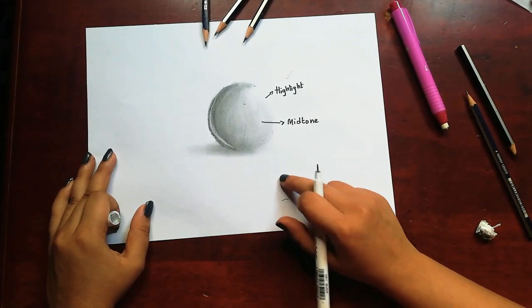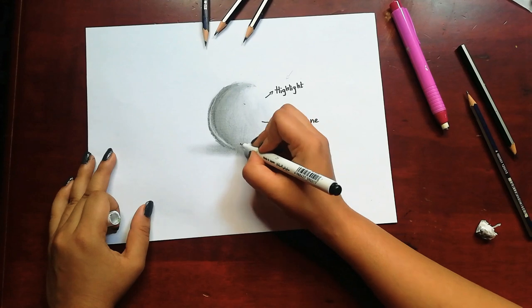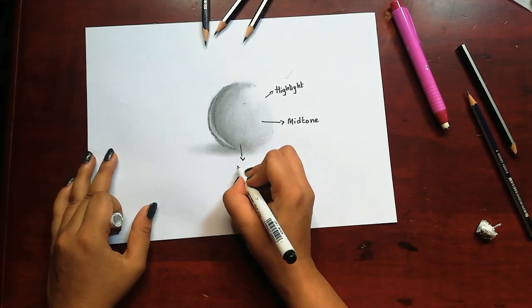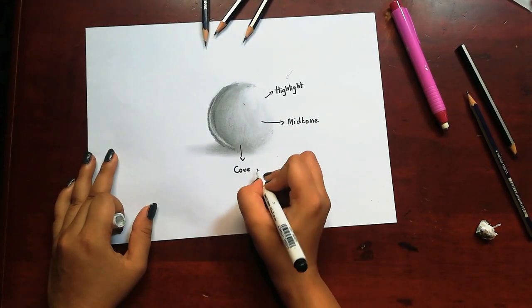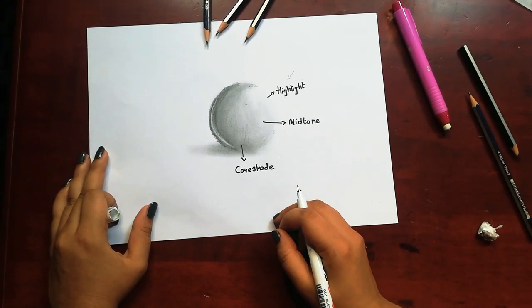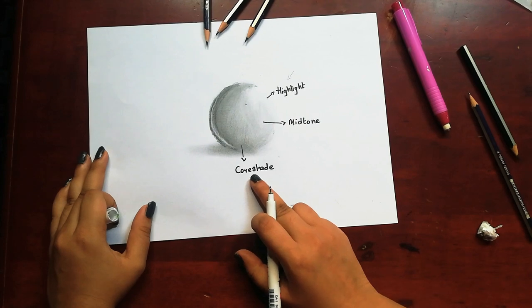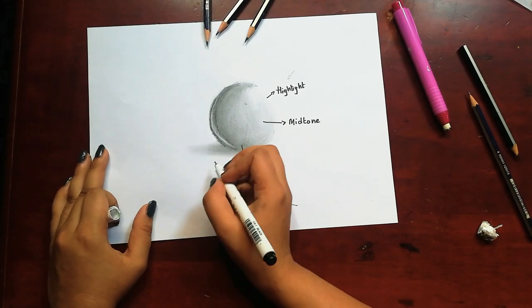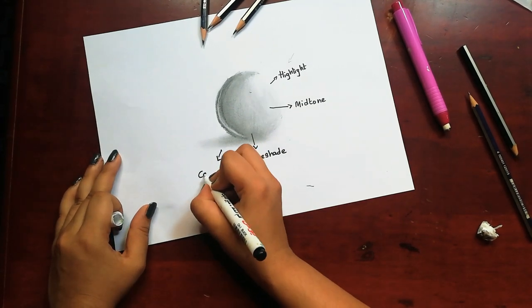Then the dark area is called the core shade. The core shade is the other side of the object where the light is not much. Then the shadow falling where the light prevents from hitting is called a cast shadow.